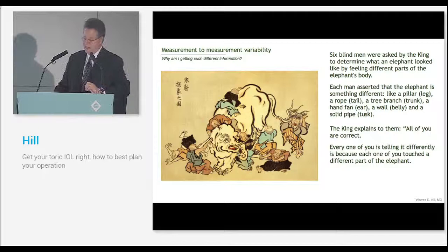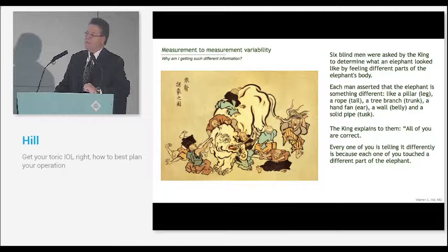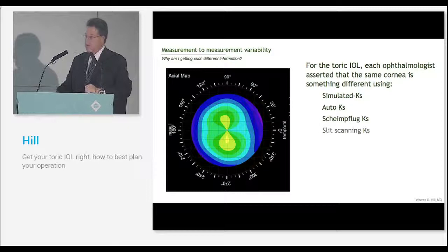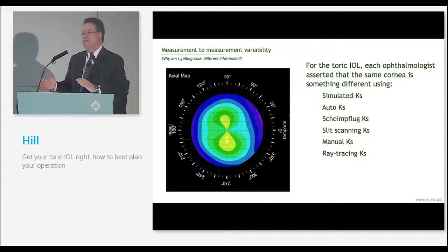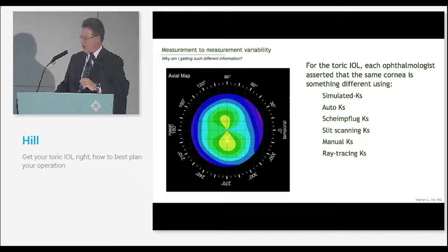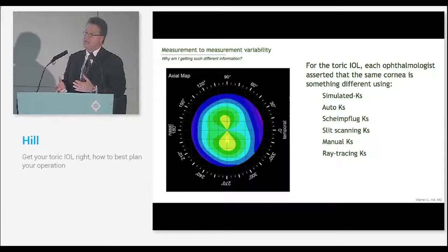The king explains that you're all correct but each one of you has looked at a different aspect of the elephant. The same is true for the cornea. If we use different devices that measure different areas and employ different algorithms, it's no surprise that what we're going to get is different numbers. To carry the analogy forward, ophthalmologists are saying the simulated K, auto K, Scheimpflug K, slit scanning K, manual K, ray tracing K - they're all different, what do we use?